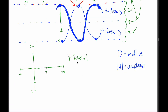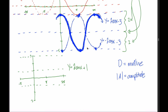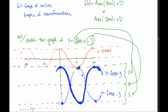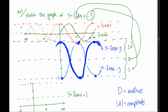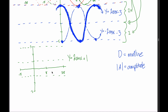Let's try another example: sketch y equals 2 sine of x plus 1. D equals 1, so the midline is at y equals 1, and the amplitude is 2. Going up 2 from the midline gives y equals 3, and going down 2 gives y equals negative 1. These dashed lines are the guidelines. Since this is a sine transformation — not cosine — the graph starts in the middle and heads upward.